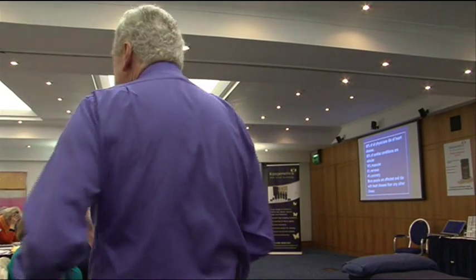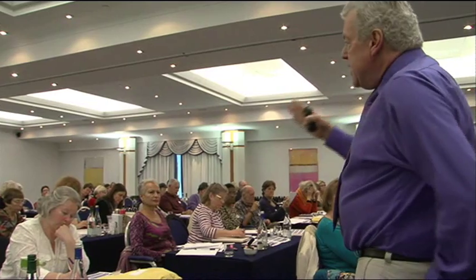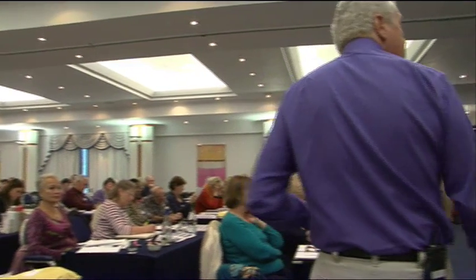6% of cardiac conditions are nervous — meaning the neurological impulse from the SA and AV nodes making the ventricles contract simultaneously. Actually 8% are of neurological origin, and this is particularly where toxins fit in. You can pick up missed beats, extrasystoles, atrial vibrations caused by chemical toxins or particularly toxic metals. And only 4% of heart conditions are coronary — but they're the big ones.